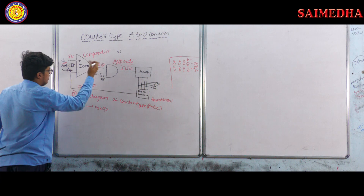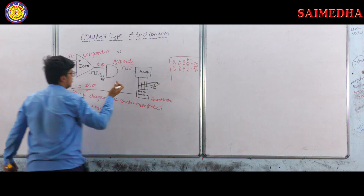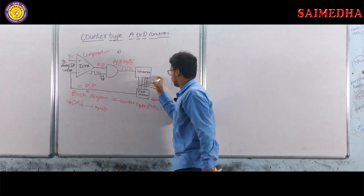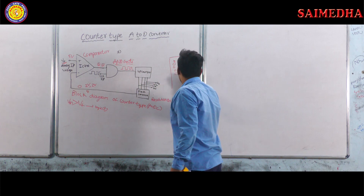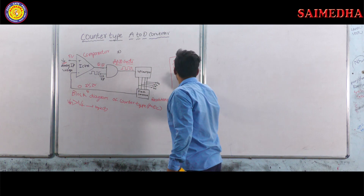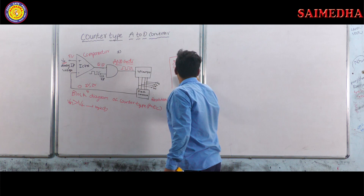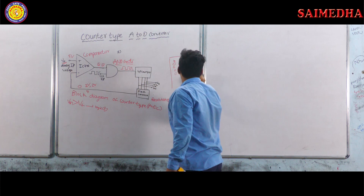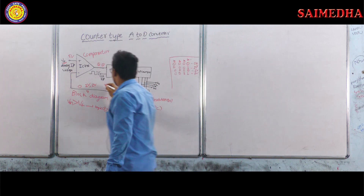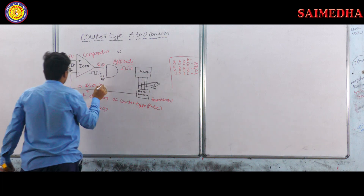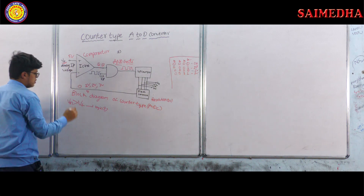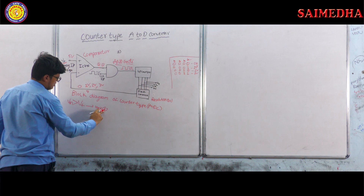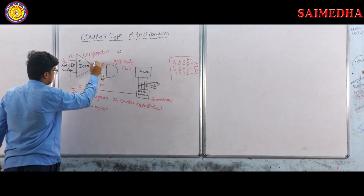The AND gate again multiplies the clock input with logic one, and the clock is given to the up counter. The up counter increments again and produces three volts. Since three volts is less than five volts, the condition again satisfies and we get logic one as output.